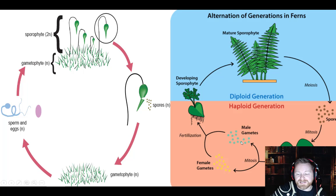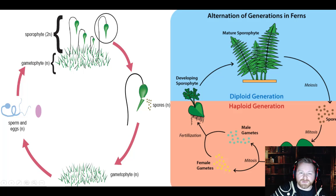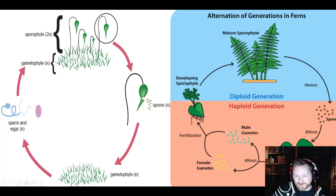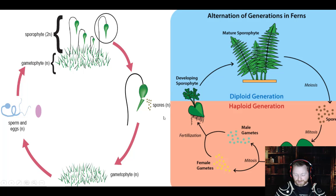The fern gametophyte produces gametes. Those gametes fuse together to form a baby fern — a baby sporophyte — which grows up into the adult fern, produces spores, spores grow into the gametophyte, produces gametes, and so on, around and around. That's alternation of generations.